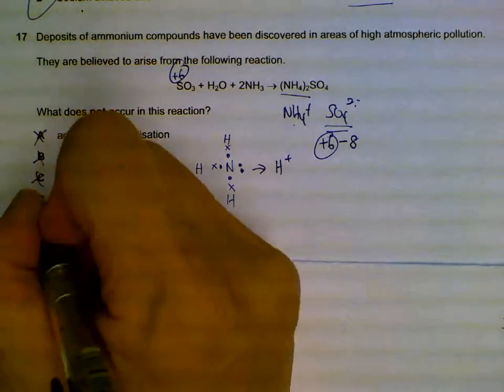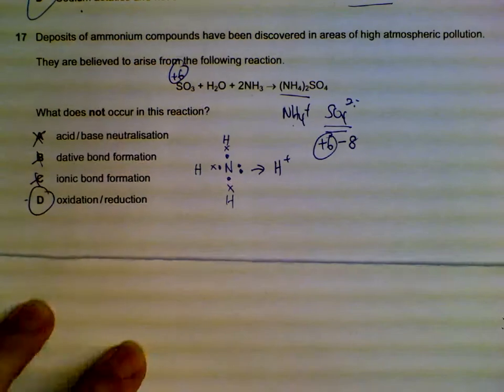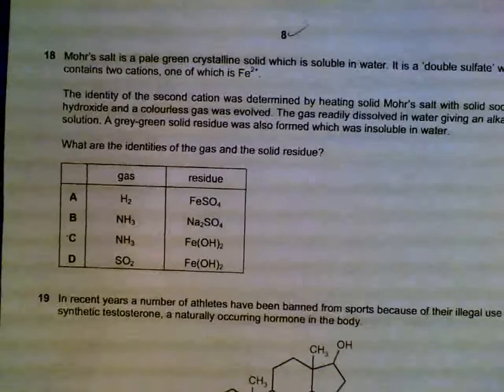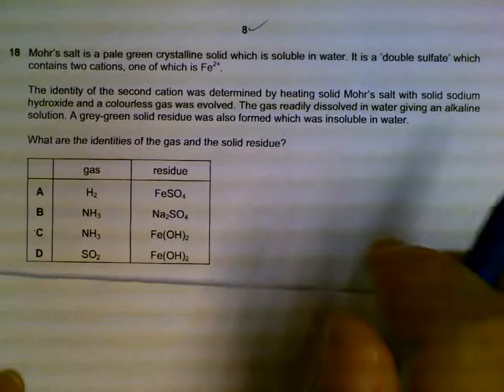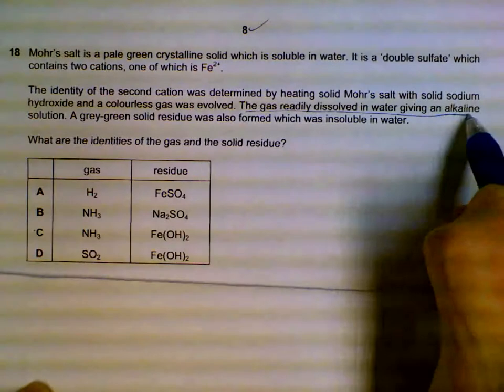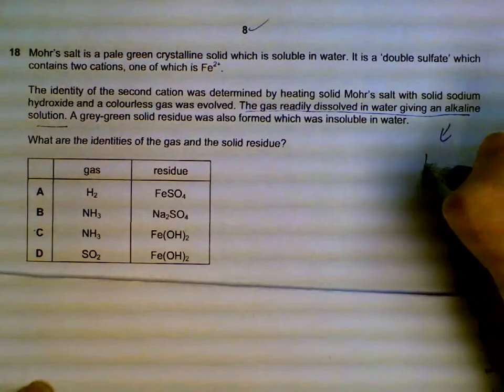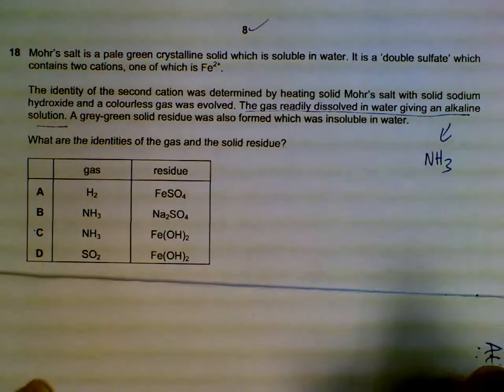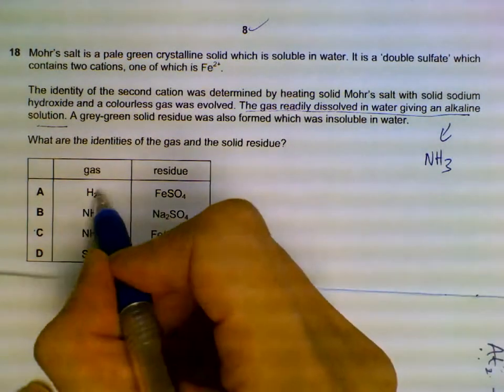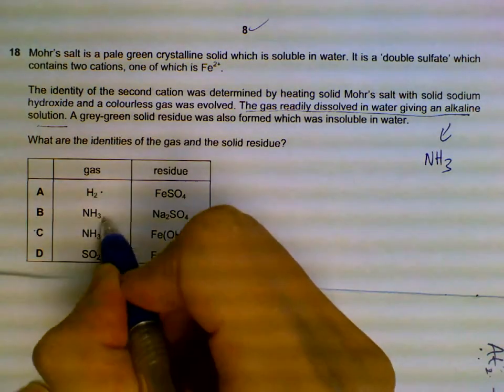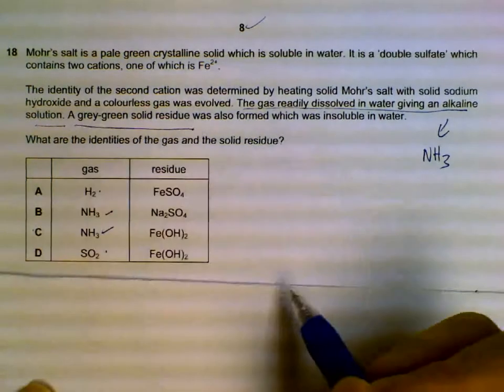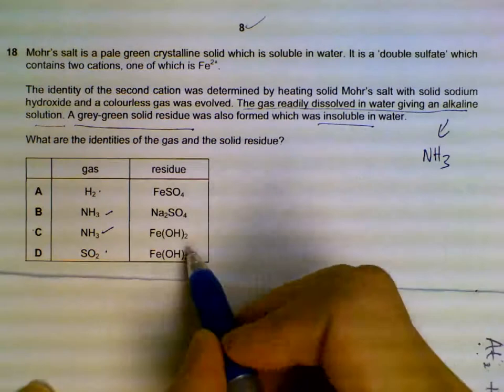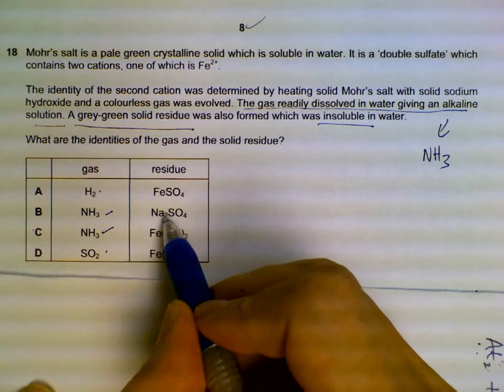Question 18 gives a lot of information. Eventually we focus on the gas being alkaline - most likely ammonia. Ammonia is neutral, hydrogen is neutral, sulfur dioxide is acidic. So we have ammonia gas. The second thing is a gray-green solid that's insoluble - sodium compounds when solid are white and soluble, so the gray-green will be iron(II) oxide.